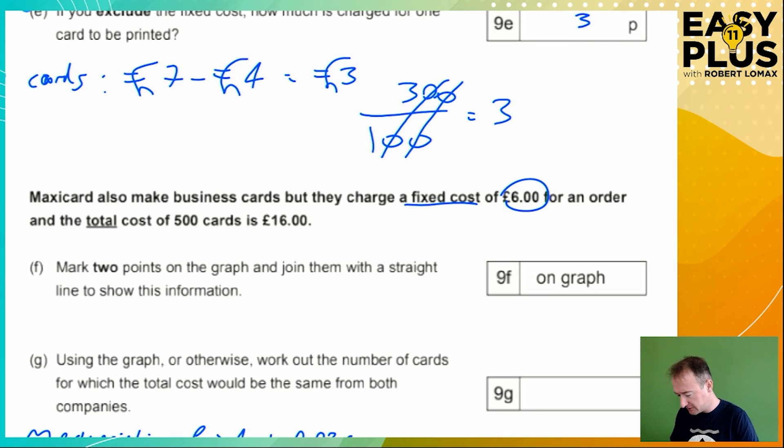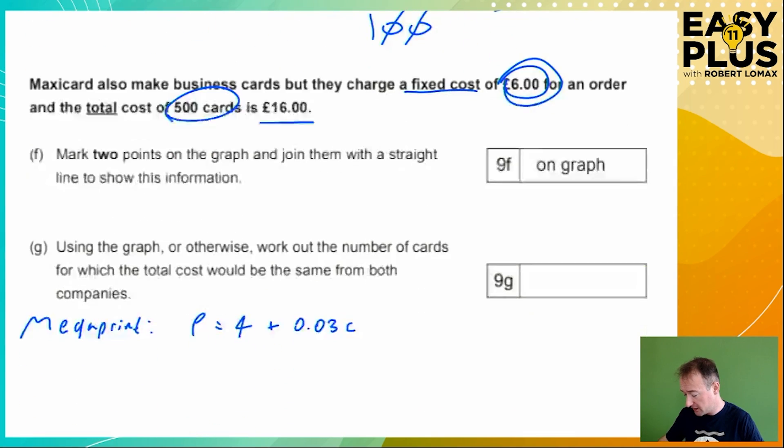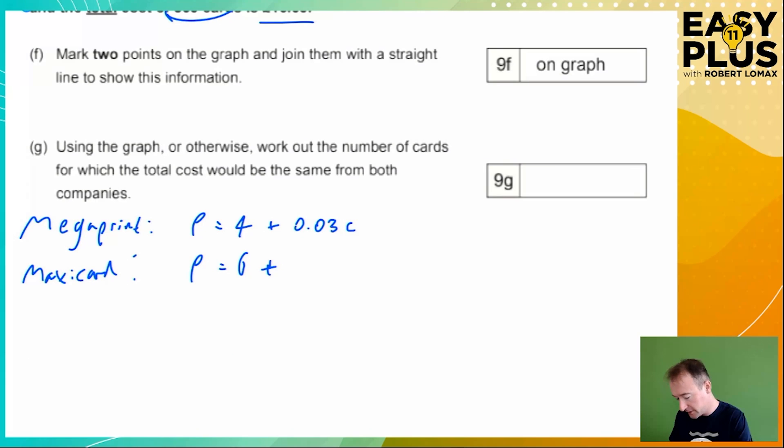Well, we can see from the information that we're given that if you buy 500 cards you pay £16. And we know that the fixed cost part of this is £6. In other words, you're charging an extra £10 when you order 500 cards. So what's the extra cost for one card? We've got £10, let's do this in pence, divided by 500, cancel the zeros. So we've got 10 divided by 5 equals 2p. So you're charging an extra 2 pence per card that you order. So it's £6 fixed cost plus £0.02, that's 2 pence, times the number of cards that you order.